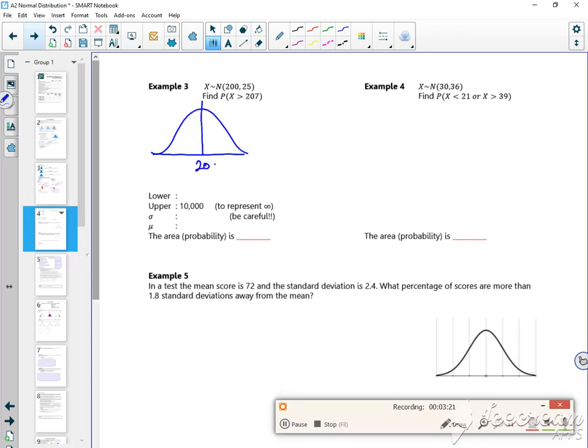200 is my mean. Now I want greater than 2.07. So that's 2.07. So I want that part of it. So my lower is going to be 2.07. My upper, to be massive, is going to be 10,000. Be careful with this because sigma squared is 25. So sigma must be 5. And mu is 200. So mu is 200, sigma is 5.